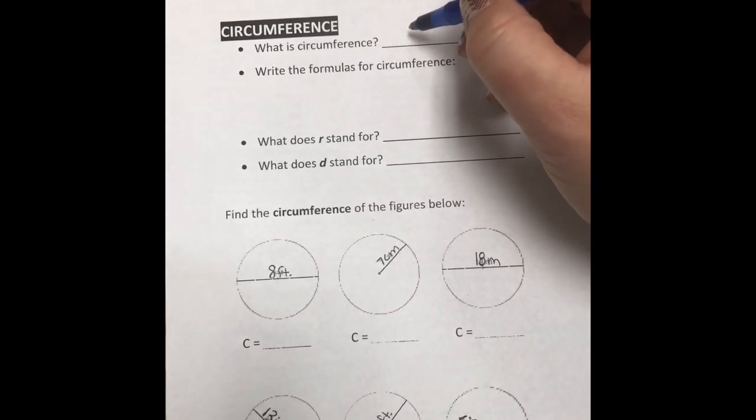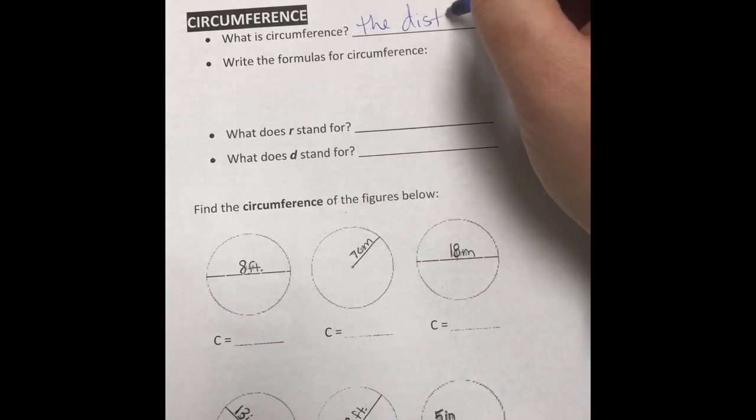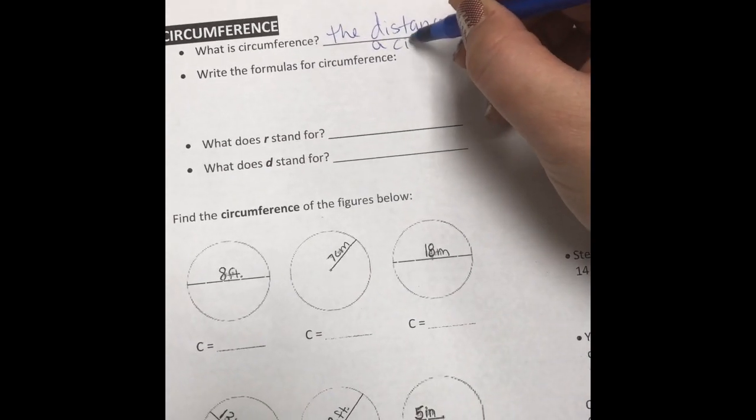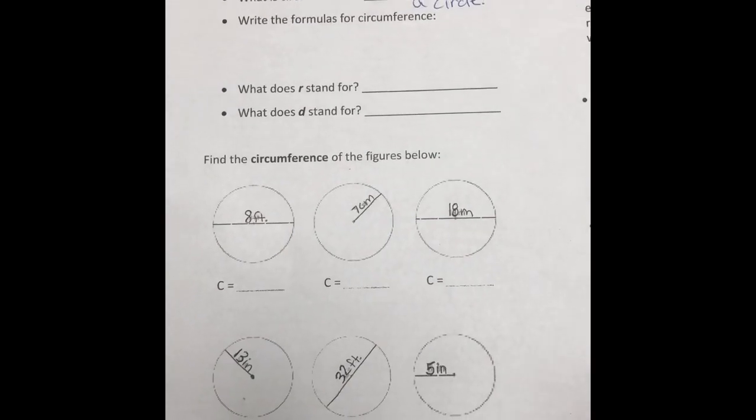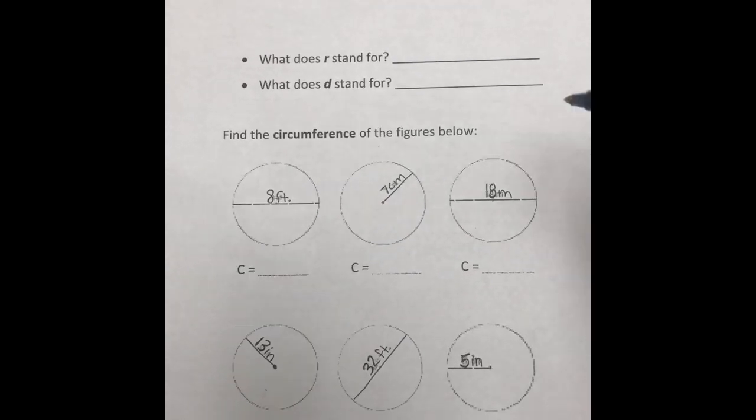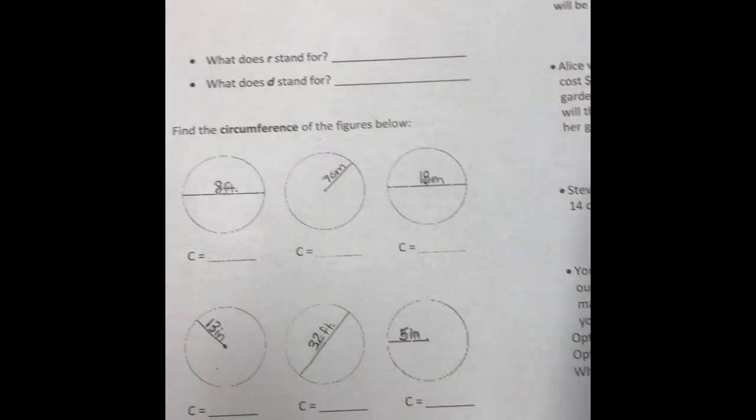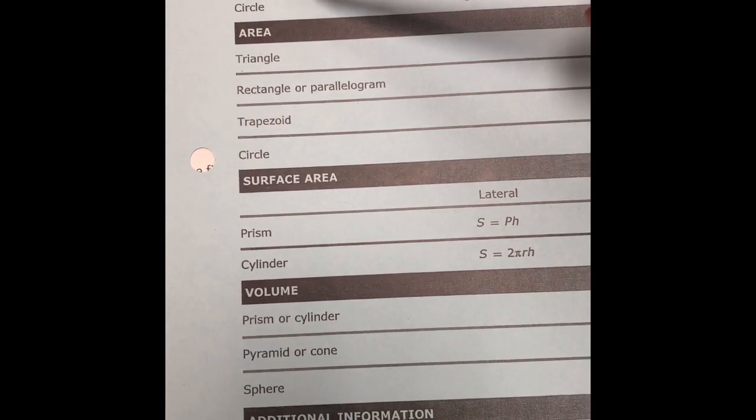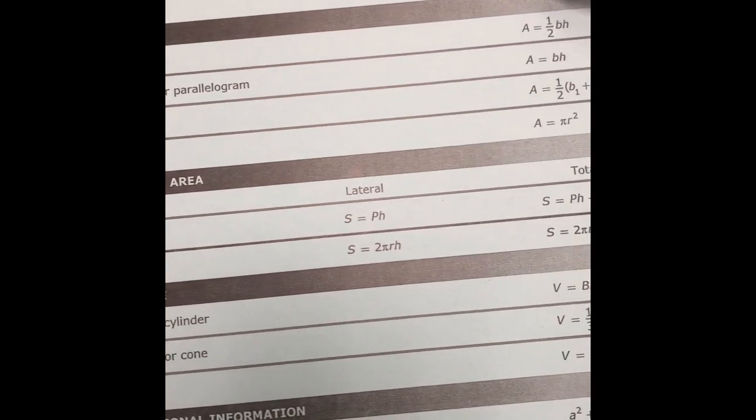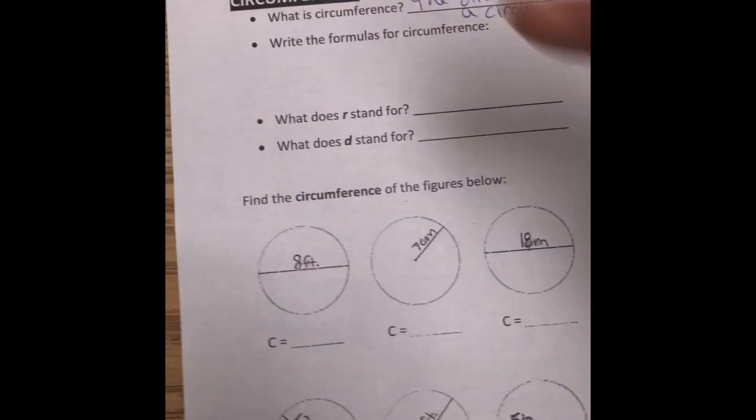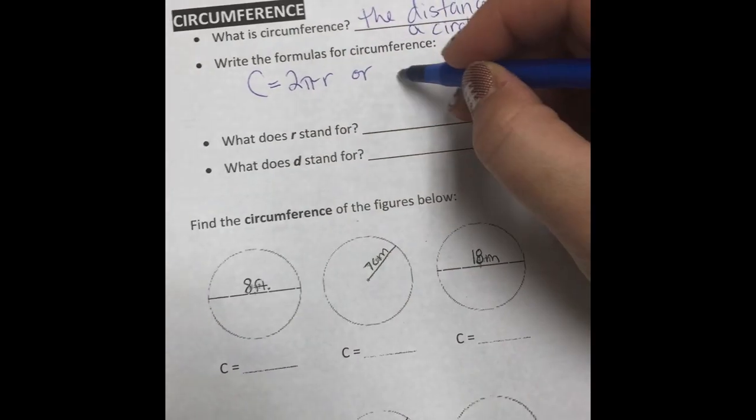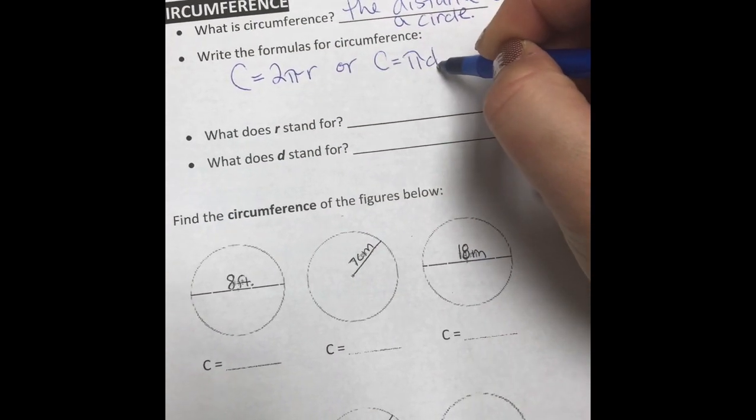Next question is, what is circumference? So circumference is the same thing as perimeter, except it is the distance around a circle. So picture the tables in my room. You sit around the circumference of a table. Your books take up the area of the table. And there are two formulas for the circumference of a circle. So if we look at our formula chart, circumference of a circle could be either C equals 2 pi R or C equals pi D. So you're going to write both of those.